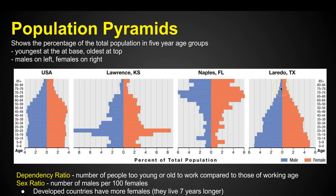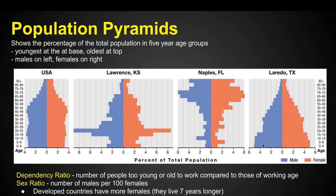Laredo, Texas is kind of like the overall population pyramid of the United States, but the bottom is a lot wider. What's going on in these earlier ages? Well, Laredo is on the border. Who's coming across the border to add to the population? We've got Latin American immigrants — young families coming over to find jobs, both male and female. That's why we see a wider population pyramid on the bottom.